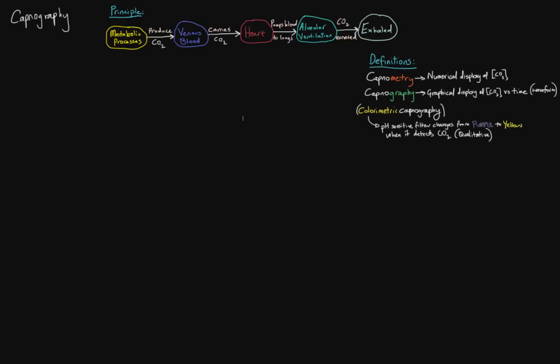So let's start off with capnometry. Capnometry, with this metri ending, is simply the measurement and then numerical display of the concentration of carbon dioxide. So that's like having a monitor attached to someone's endotracheal tube, and it's simply giving you a number of what the end tidal is.